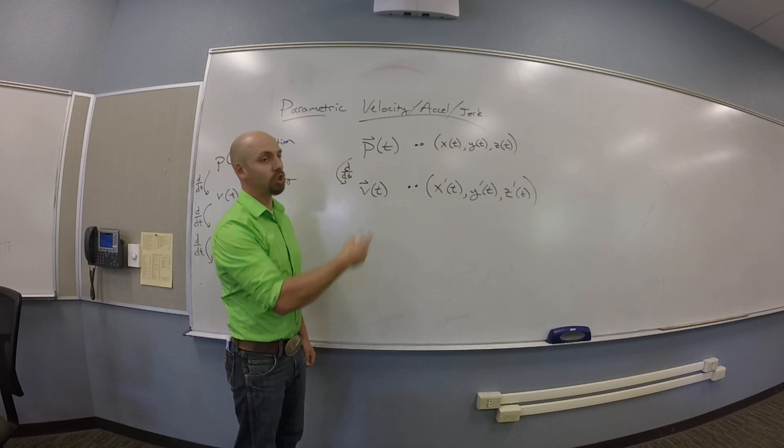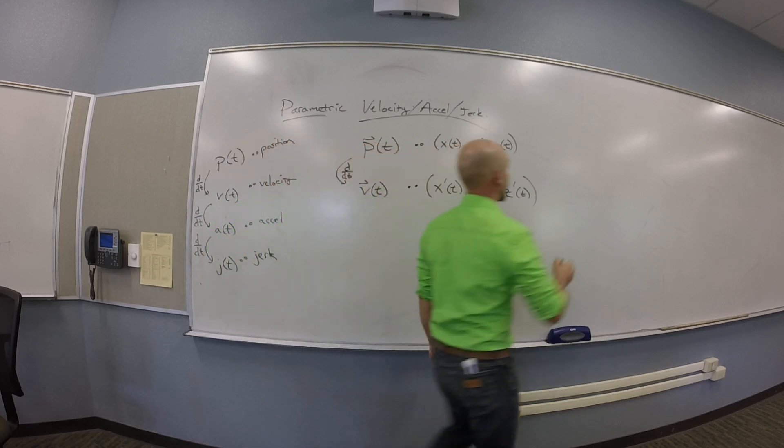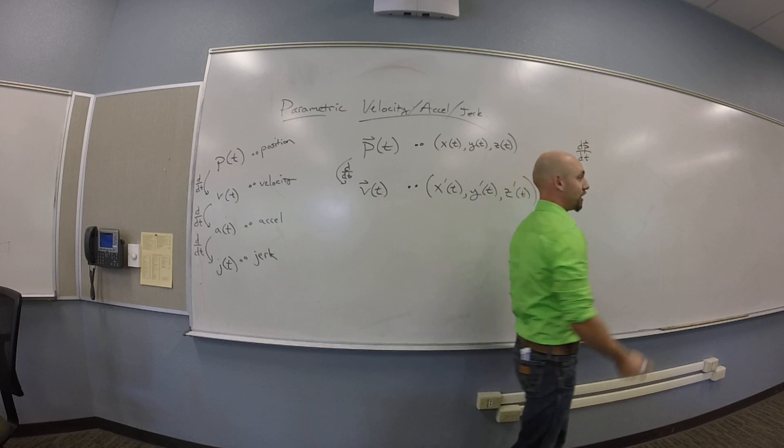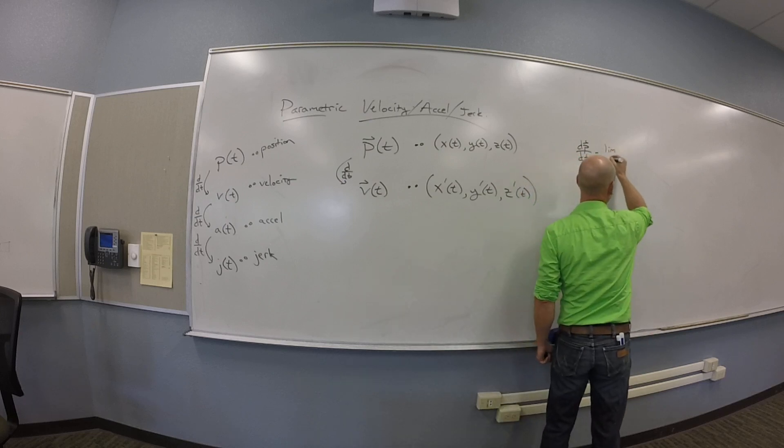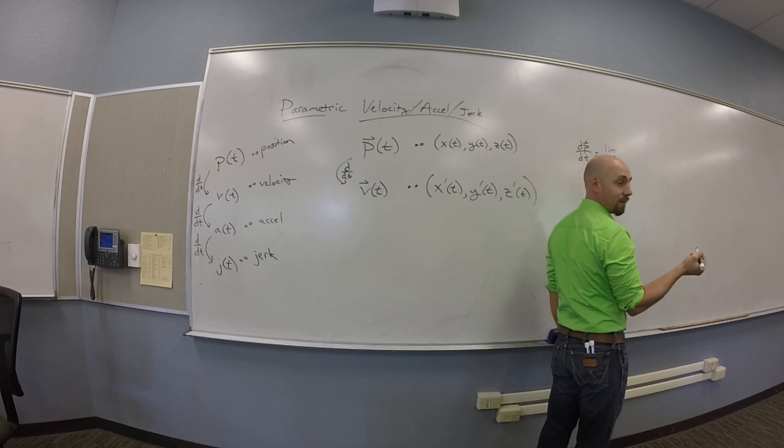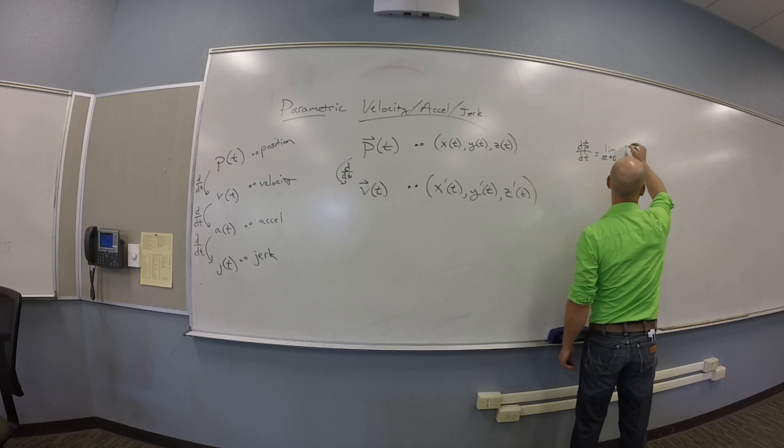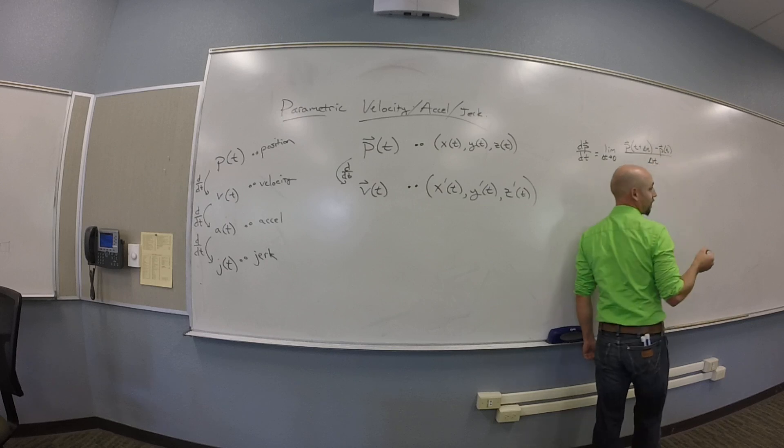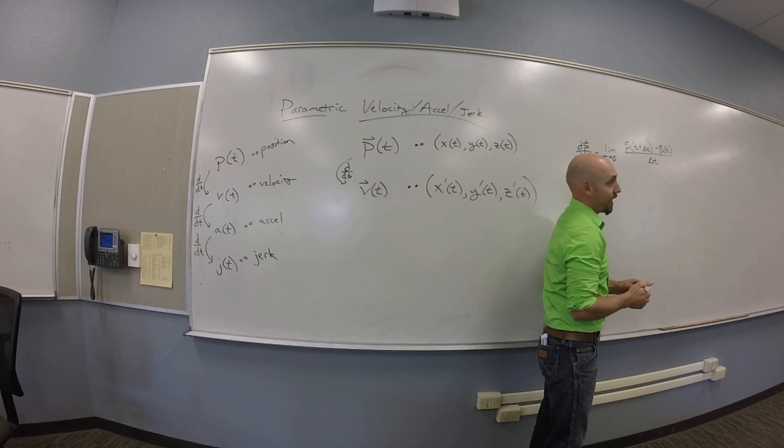That seems like a good idea. Let me show you that that's actually what you should get. If we're going to do dp dt, the way we would do this is we would take a limit as delta t goes to zero. It should be p of t plus delta t minus p of t all over delta t.